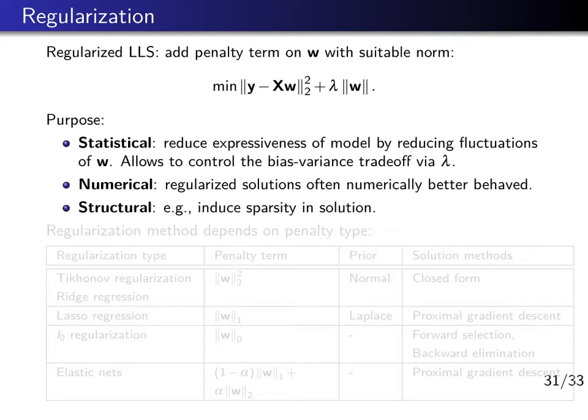Finally, we may want certain structures in our solution, for example, sparsity. Let's say we are interested in obtaining a parameter vector w which has many zeros and few non-zero values. For example, because we want to assign an interpretation to the solution, we want to understand which feature functions have significant relevance. In this case, it makes sense to use a penalty term which enforces many zeros.